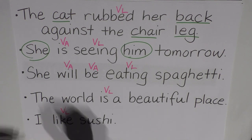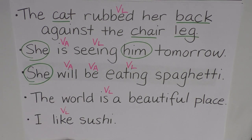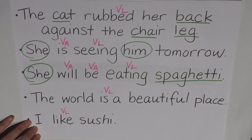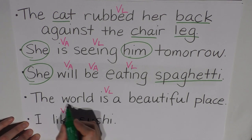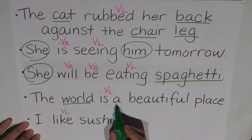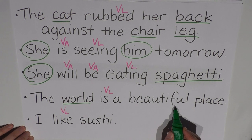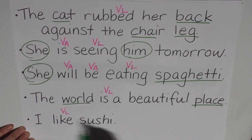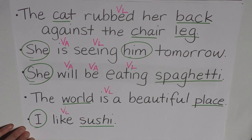She will be eating spaghetti. 'She', as we know, is a pronoun. Will be eating we've already identified as verbs. And 'spaghetti' — you can't count spaghetti, but you could say 'the spaghetti's curl' or 'the spaghetti', so it takes an apostrophe S and a determiner. I'm going to say that's a noun. The world is a beautiful place — 'world' comes straight after 'the', so that's definitely a noun. 'A beautiful place' — 'beautiful' is an adjective describing the place, so 'place' is the noun. And I like sushi — 'I' is the pronoun and 'sushi' is the noun. If you pushed yourself and looked at pronouns and nouns as well as verbs, then congratulations — there's your answer.